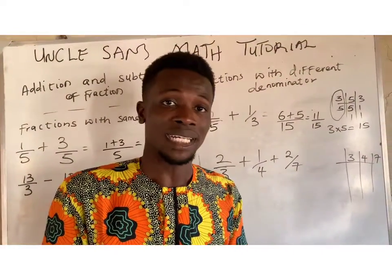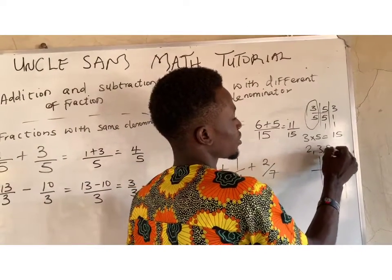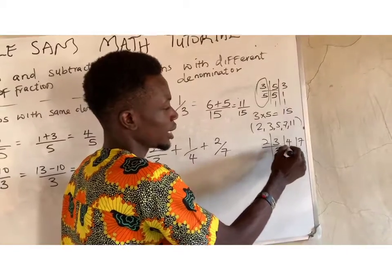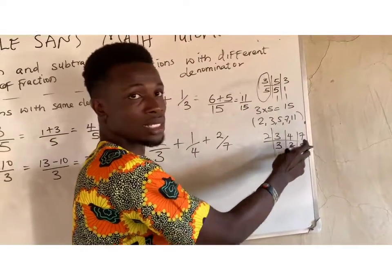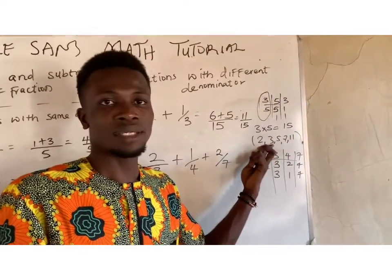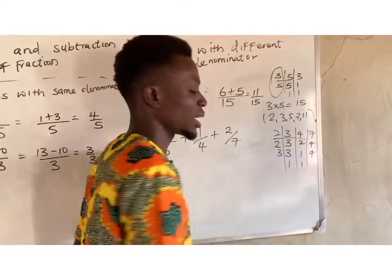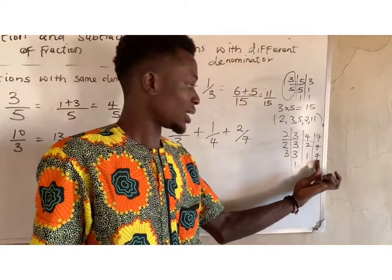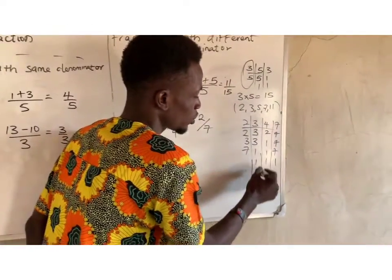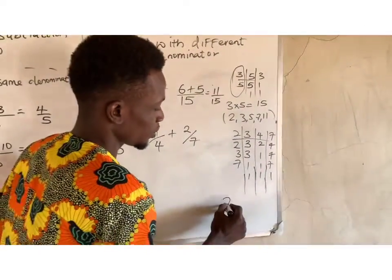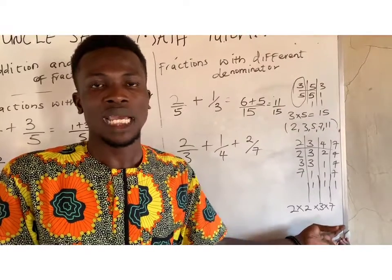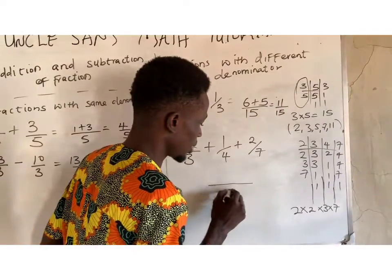We use a set of prime numbers to divide through for prime factors: 2, 3, 5, 7, 11, and so on. We start with 2: 2 can divide 4, giving 2; bring down 3 and 7. Use 2 again: 2 divides 2 giving 1; bring down 3 and 7. Next prime is 3: 3 divides 3 giving 1; bring down 1 and 7. Then use 7: 7 divides 7 giving 1. Once we reach 1, 1, 1 we are done. The LCM is 2 times 2 times 3 times 7: 2 times 2 is 4, times 3 is 12, times 7 is 84. So the LCM is 84.